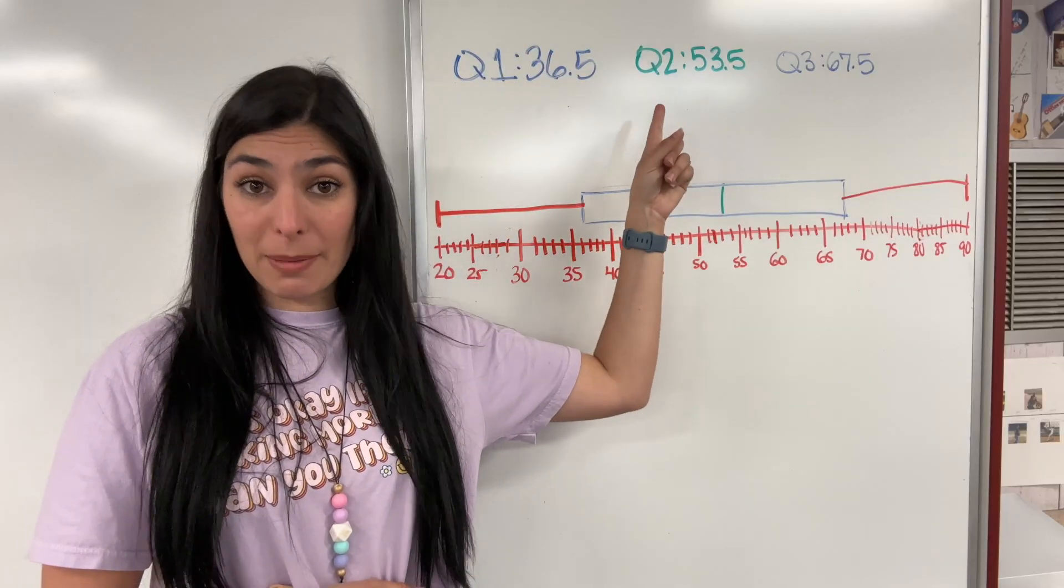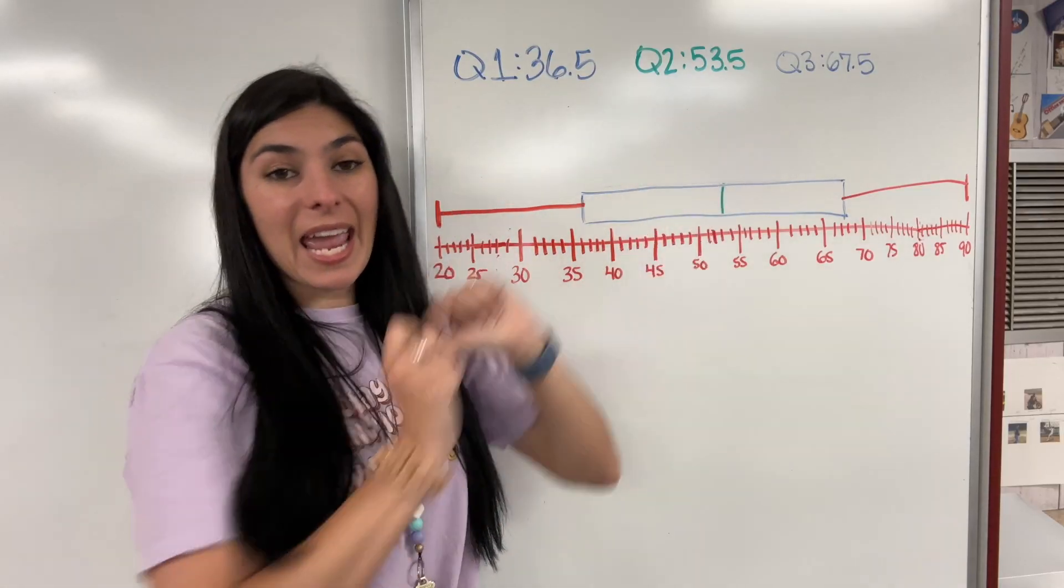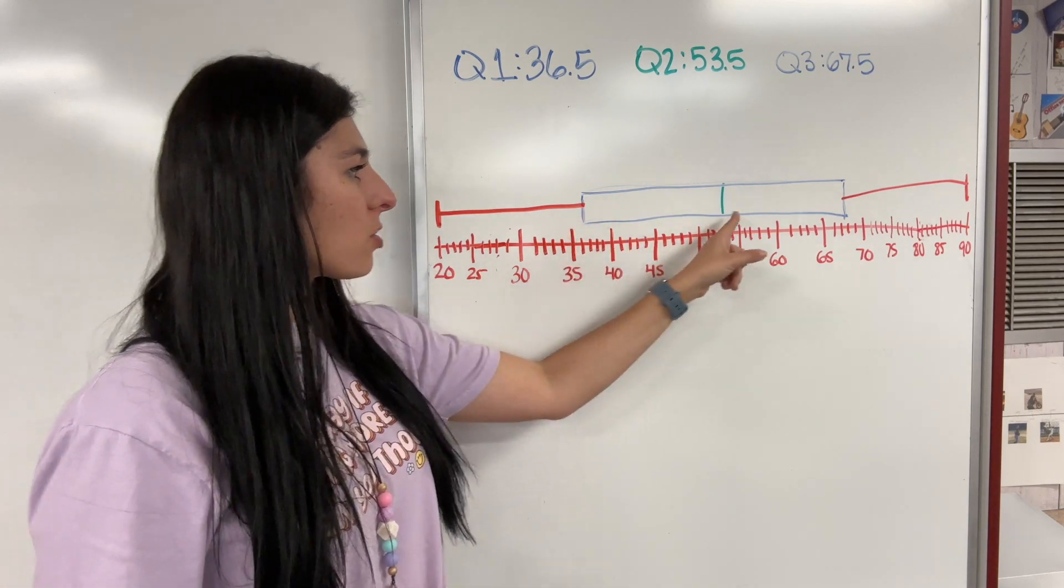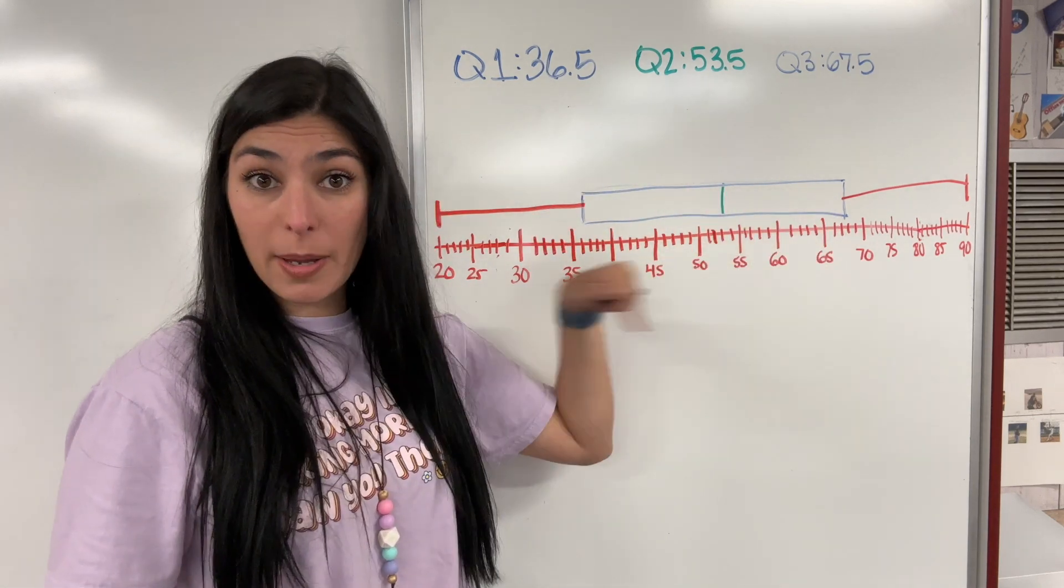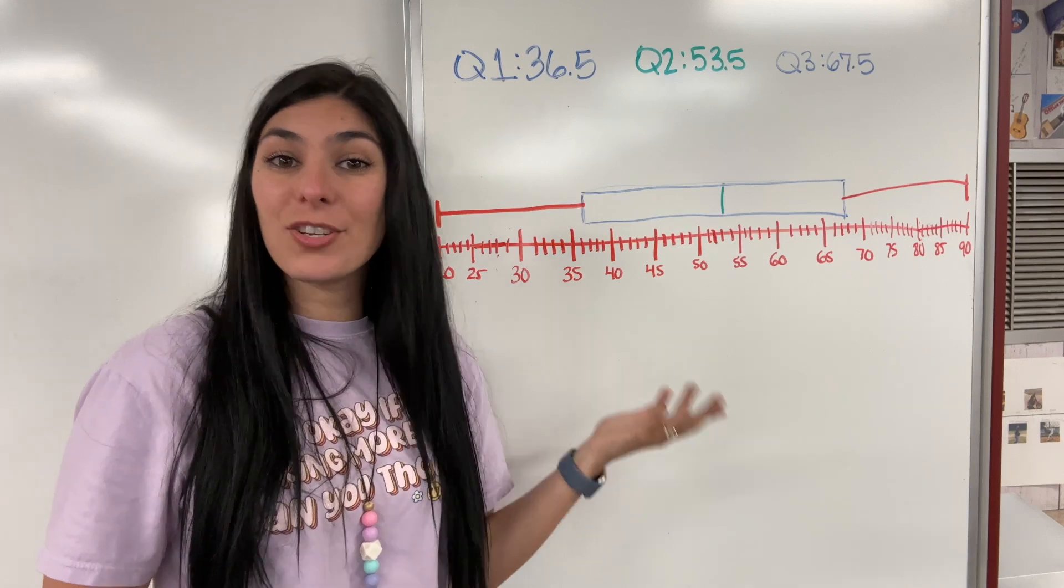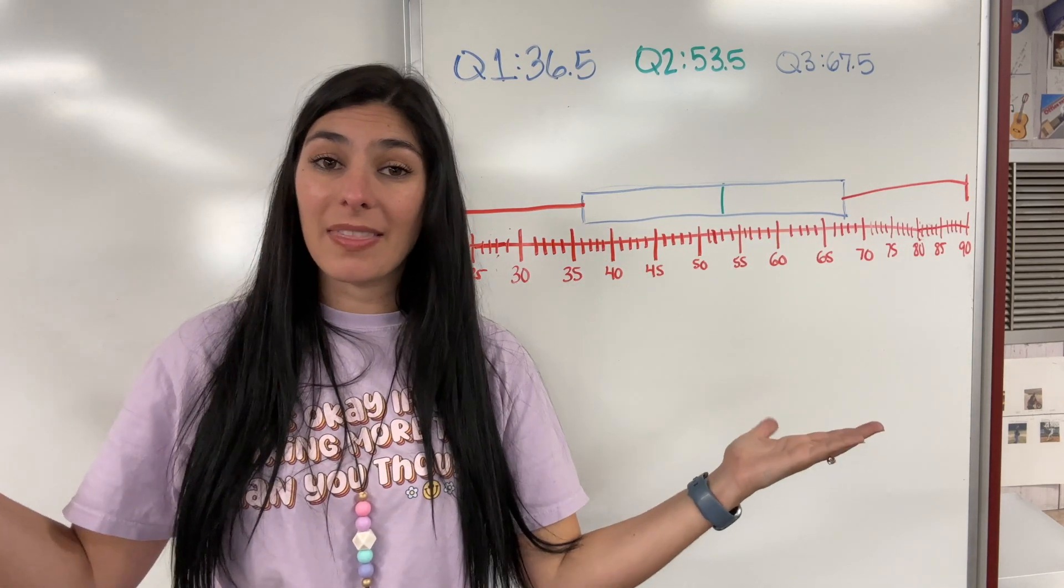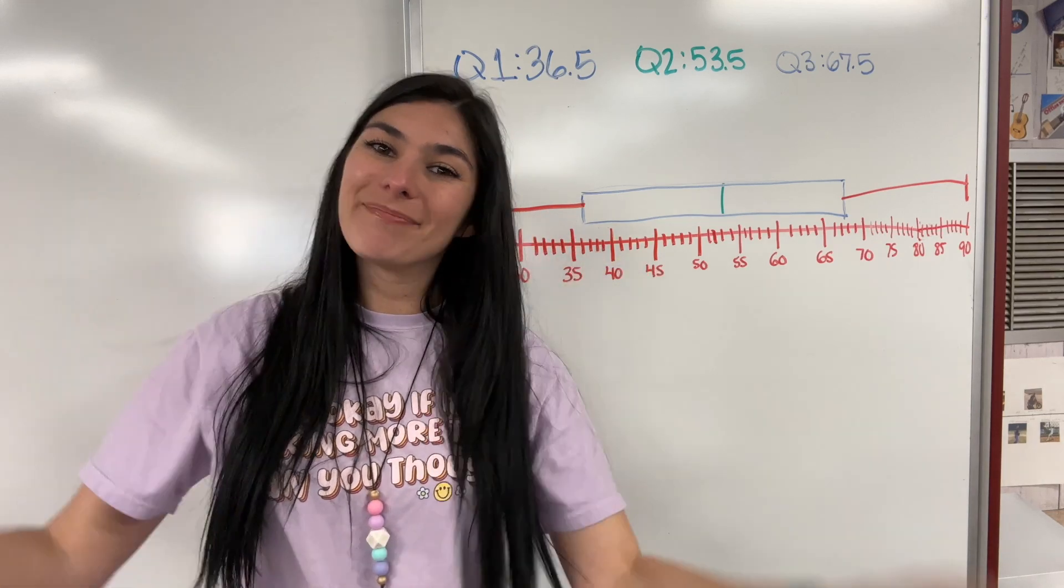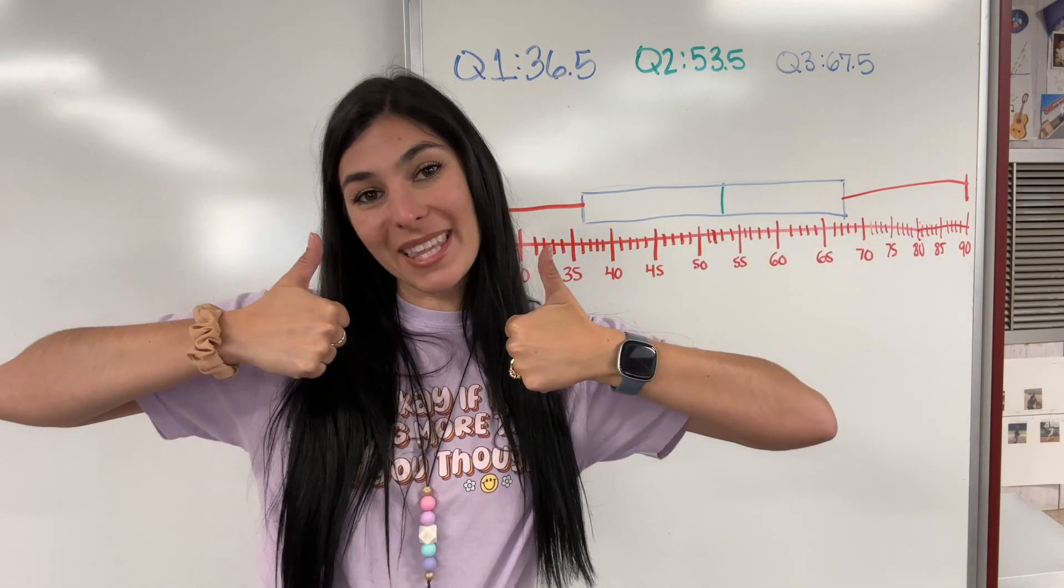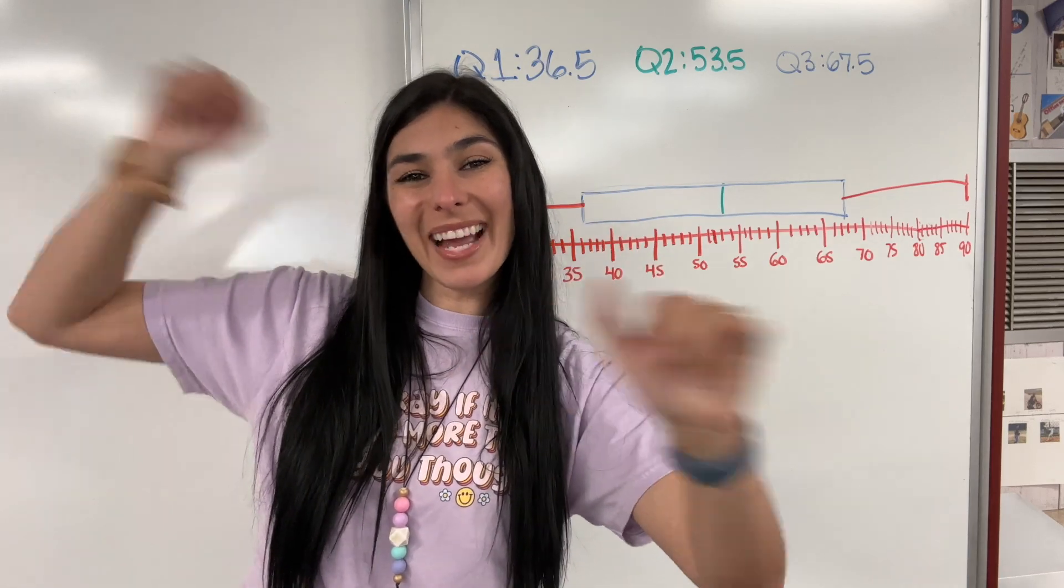Remember to find your quartiles, your big median and your baby medians. Then you're going to plot those quartiles - 1, 2, and 3. Turn it into a box, hence the box plot. And then don't forget your whiskers, your lowest and your highest number. All together, there is your box and whisker plot. If you liked this video, if you found it helpful, please give a big thumbs up. Don't forget to subscribe, and I'll see you in the next one. Bye guys.